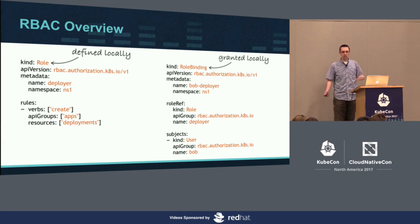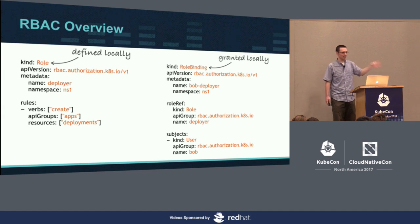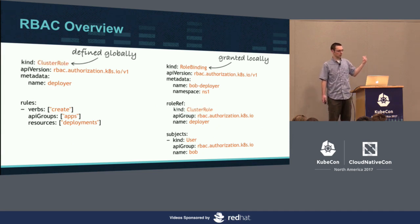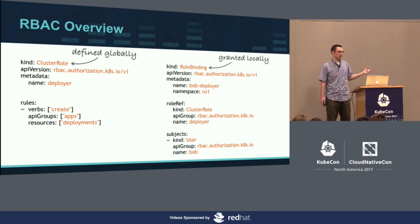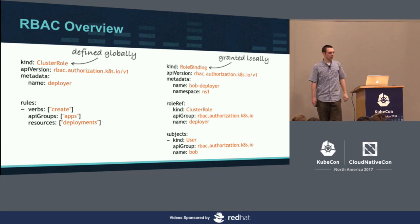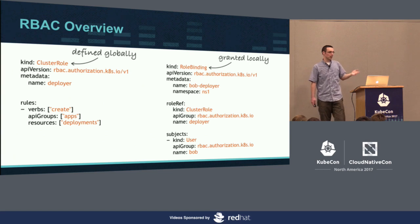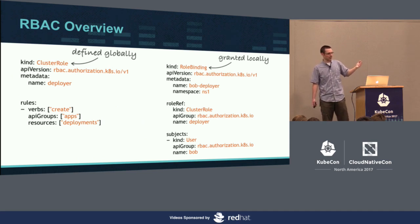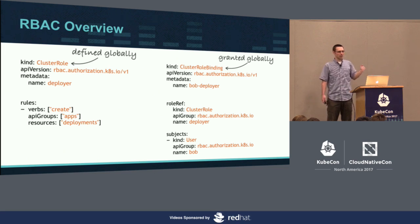Creating deployments is something useful to grant in other namespaces, and it would be a pain to copy this into every namespace. We can define this globally by changing the kind from Role to ClusterRole. All that changes is the kind, and the kind inside the role ref. Now we're defining the permissions globally but still granting them locally. If Alice was in the NS2 namespace, we could create an almost identical role binding inside NS2 referencing this cluster-level role, letting us reuse permissions and maintain policy in one place.